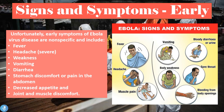Moving on, let's explore the signs and symptoms of the disease. Unfortunately, the early signs and symptoms of Ebola virus disease are non-specific and include fever, severe headache, weakness, vomiting, diarrhea, stomach discomfort or abdominal pain, decreased appetite, and joint and muscle discomfort. Because these early signs are so non-specific, it's very difficult to determine if someone has the disease, which is a great concern — these patients need to be quarantined even if they show only a few early symptoms.